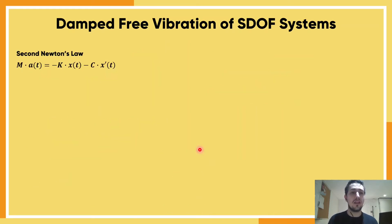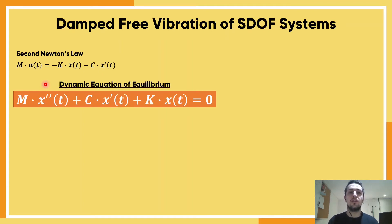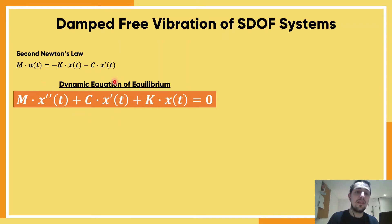If we take Newton's second law — the sum of forces equals ma — we get the dynamic equation of equilibrium for a damped free vibration system. It's exactly like the previous one but now we add this term of damping times velocity.